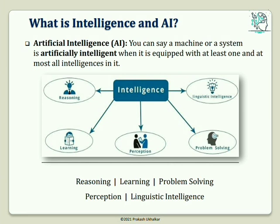Learning enhances the awareness of the subjects of study. The ability to learn is possessed by humans, some animals, and AI-enabled systems. Problem solving is the process in which one perceives and tries to arrive at a desired solution from a present situation by taking some path blocked by known or unknown hurdles. Problem solving also includes decision making, which is selecting the best suitable alternative out of multiple alternatives to reach the desired goal.